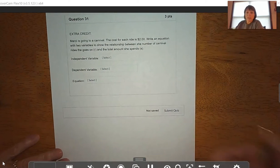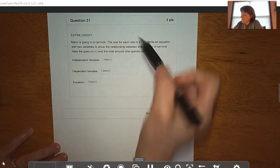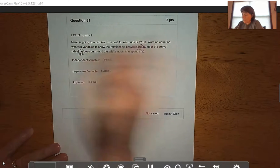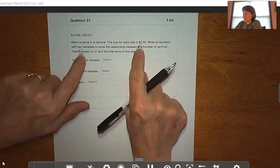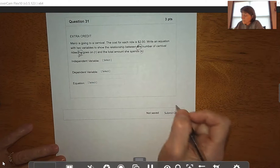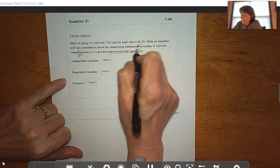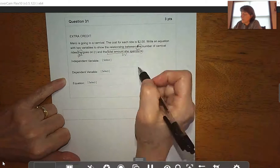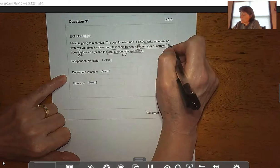Last one is an extra credit option. Marcy is going to a carnival. The cost for each ride is $2. Write an equation with two variables to show the relationship between the number of carnival rides she goes on and the total amount she spends. The number of rides will be R, and the total amount she spends is S. Our dependent variable is the total amount she spends - that's always the dependent variable, the total score or total amount. What determines the total amount she spends? That's the number of carnival rides she goes on - that's our independent variable.